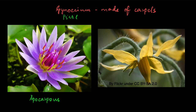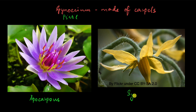The opposite is when the carpels are all joined together. For example, in this flower, these are the stamens and this is the gynoecium. You see how they're all joined together — you can make out the separate carpels by these ridges, but they are all fused together to form one gynoecium. This type of gynoecium is called syncarpous. Syn means together, so syncarpous.